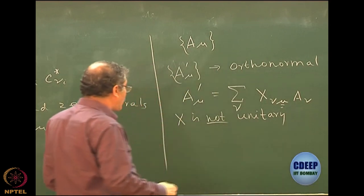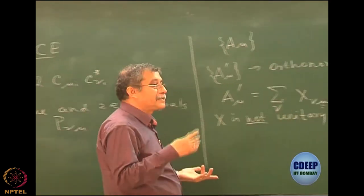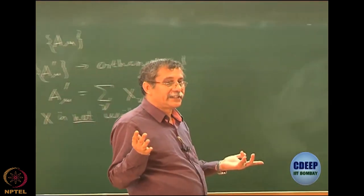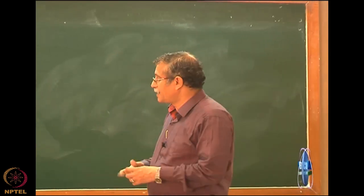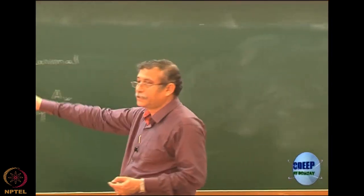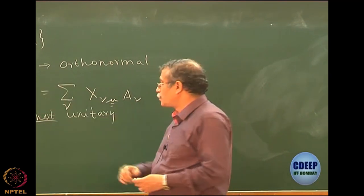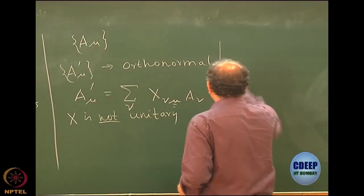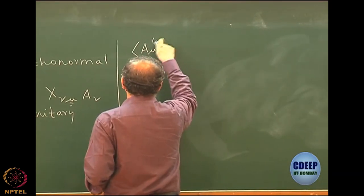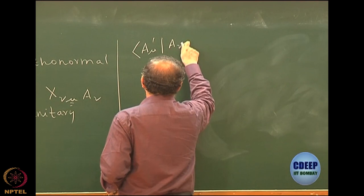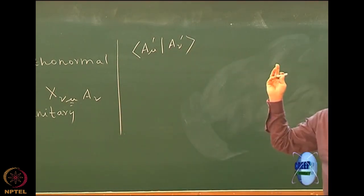We need to know what the character of X should be. Unitary essentially means X†X equals identity — it is not of that character. So what is the character of X such that the A_μ′ set will become orthonormal? To analyze that, let us look at the overlap of two prime vectors, say ⟨A_μ′|A_ν′⟩. This should become δ_μν, correct? We expand both the left and right hand sides exactly with this basis.